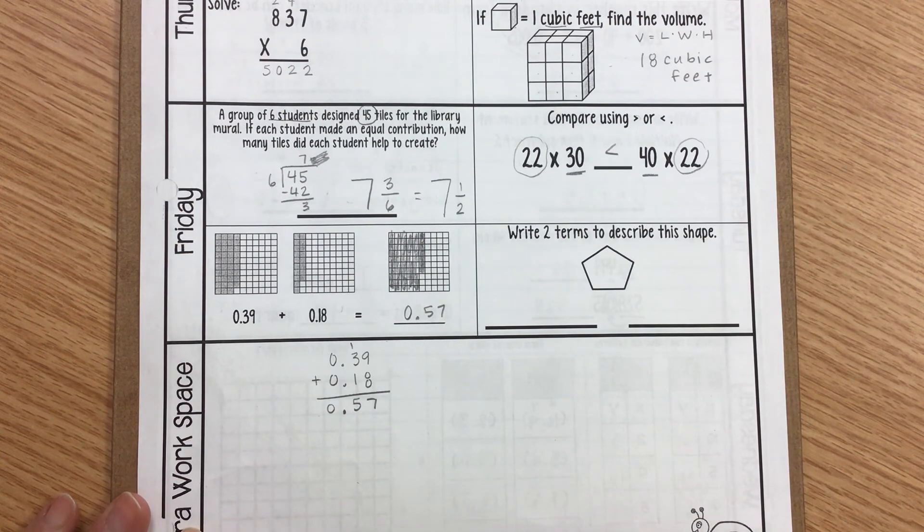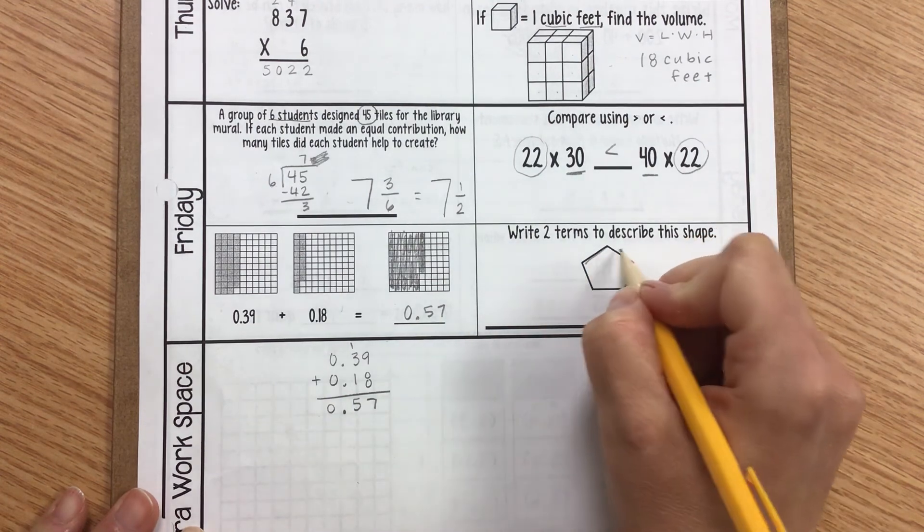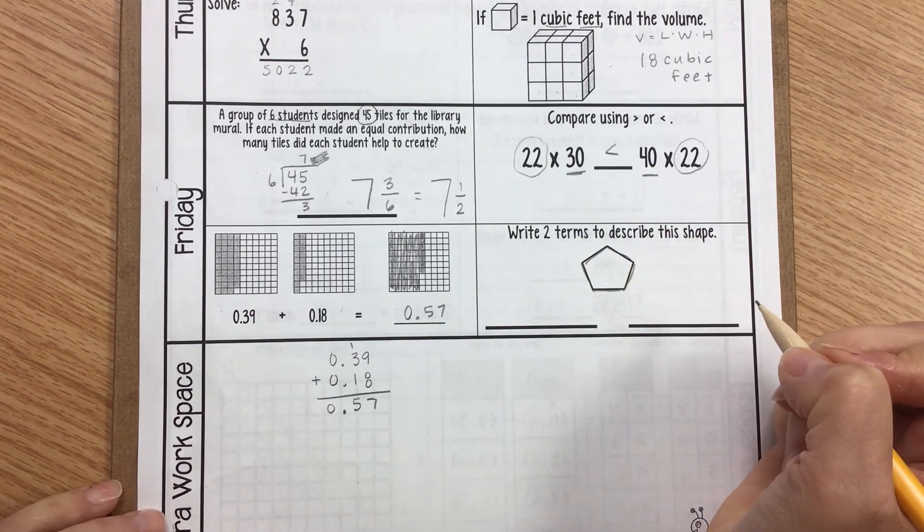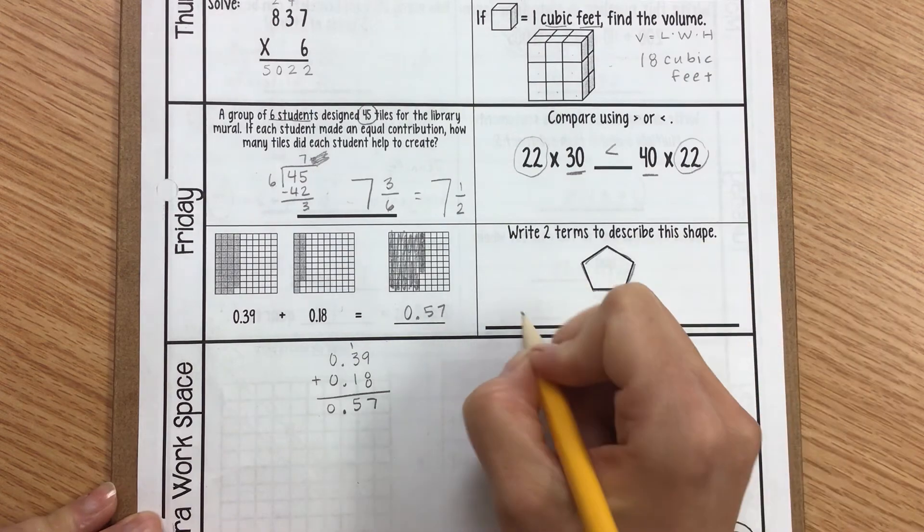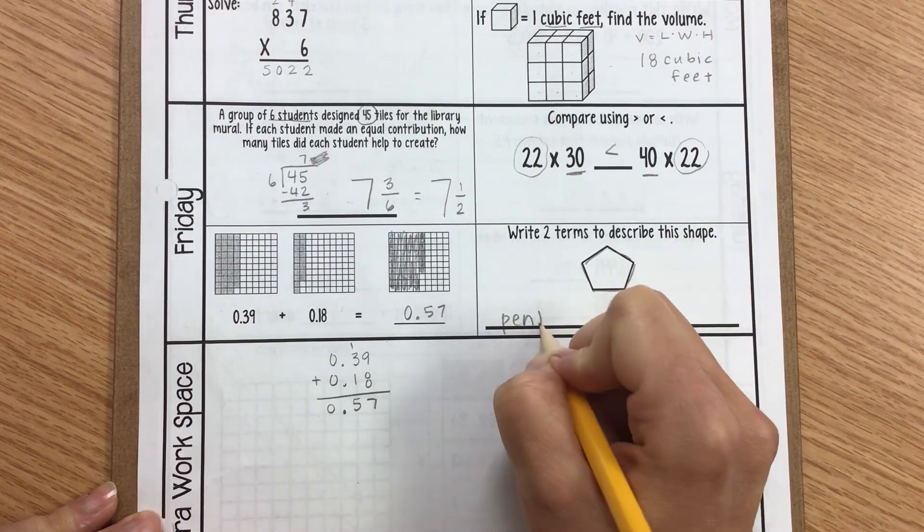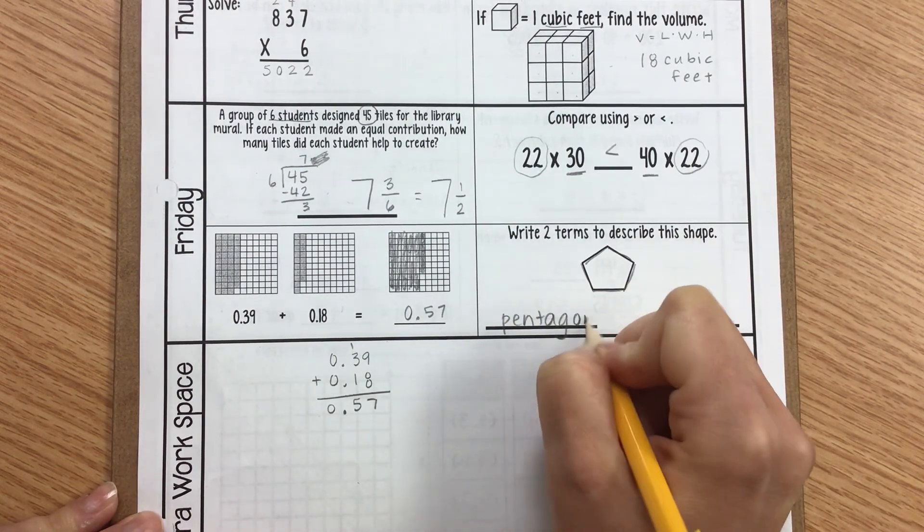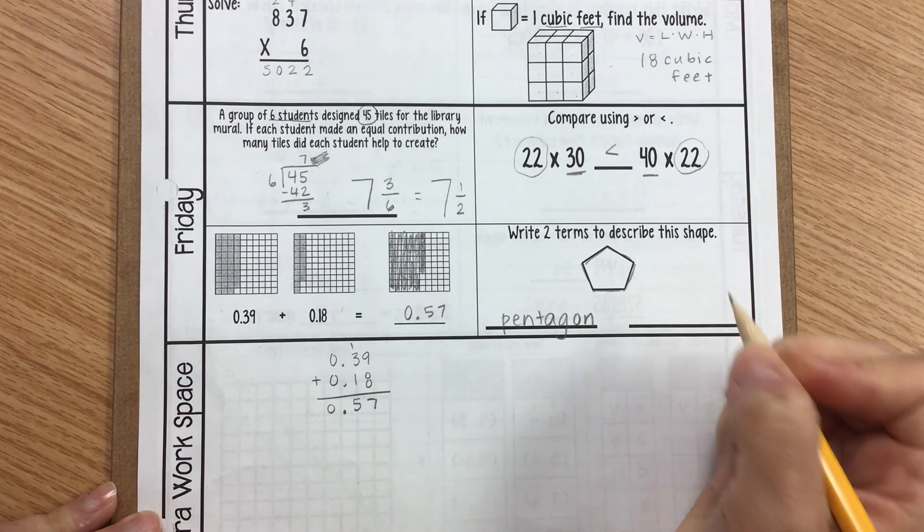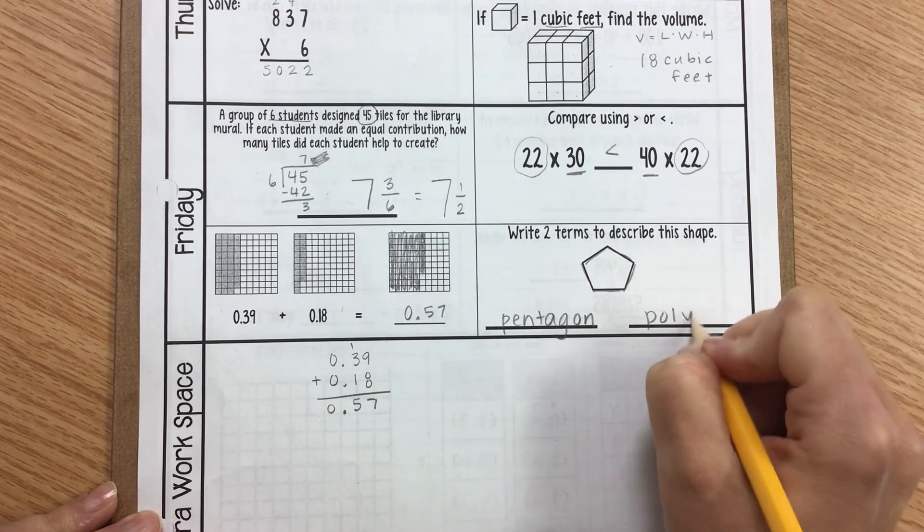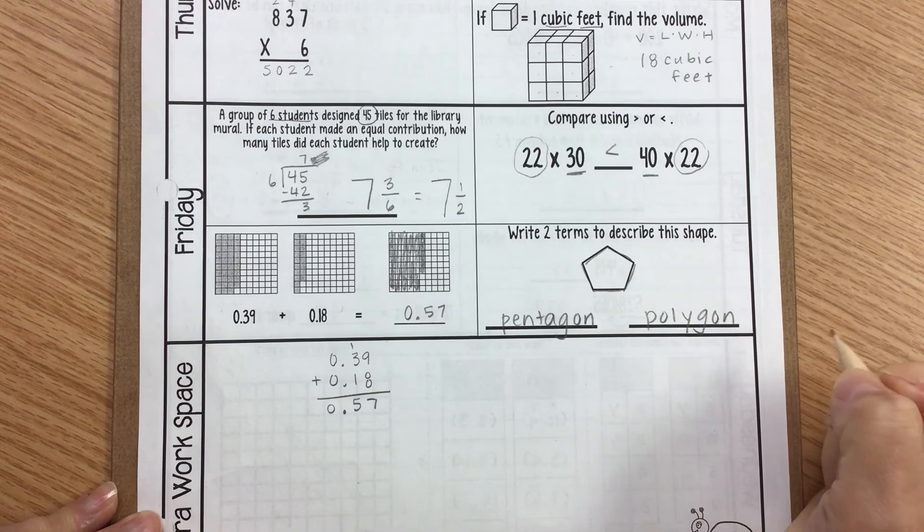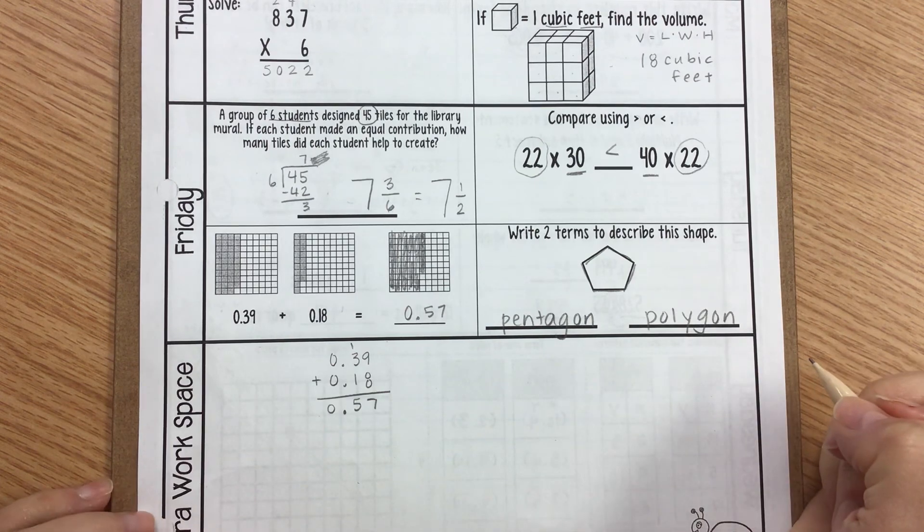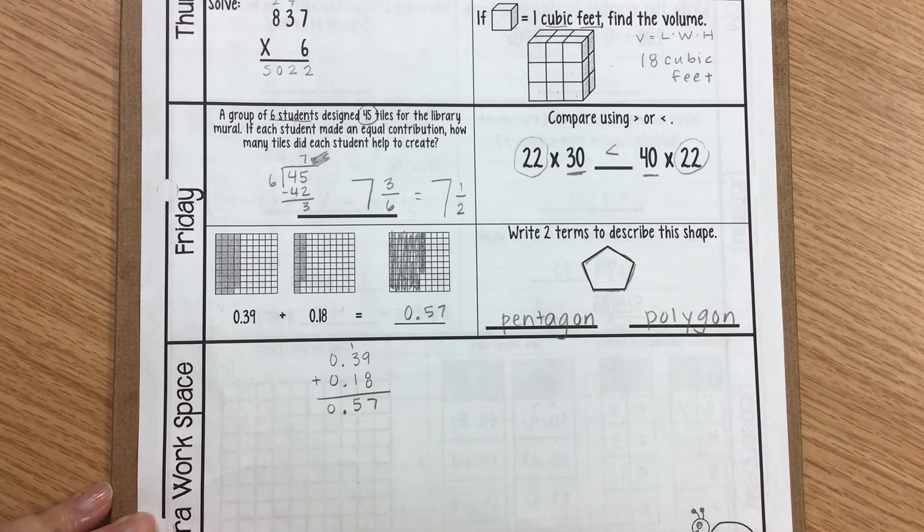Our last one says write two terms to describe this shape. So I see there's 1, 2, 3, 4, 5 sides. That means that it's going to be a pentagon. And it's also going to be a polygon. Polygon just means it's a many-sided figure. As you can see here. Now I see here. Last one.